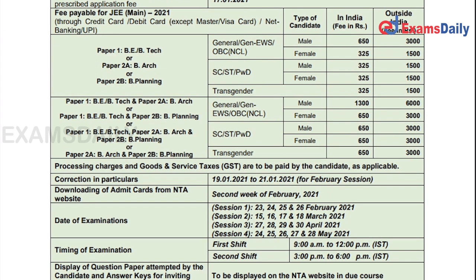For combinations of papers — Paper 1 (B.Tech) and Paper 2A (B.Arch), or Paper 1 and Paper 2B (B.Planning), or all three papers together — the fee for male is ₹1300 and female is ₹650. For SC/ST candidates it is ₹650 for both. For general candidates outside India, male is ₹6000 and female is ₹3000. SC/ST and PWD candidates outside India pay ₹3000 for both male and female. Transgender candidates pay ₹650 inside India and ₹3000 outside India.